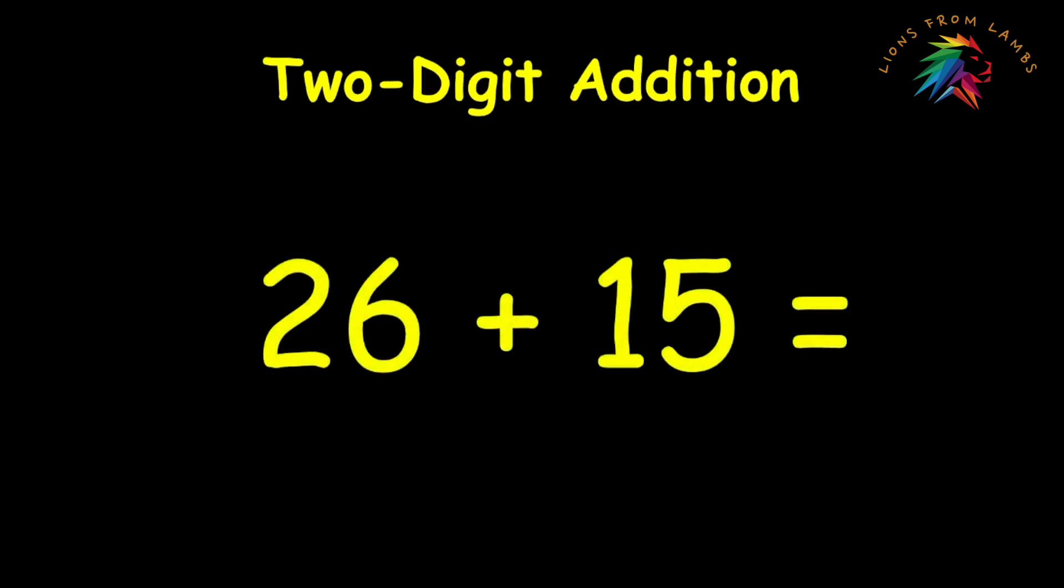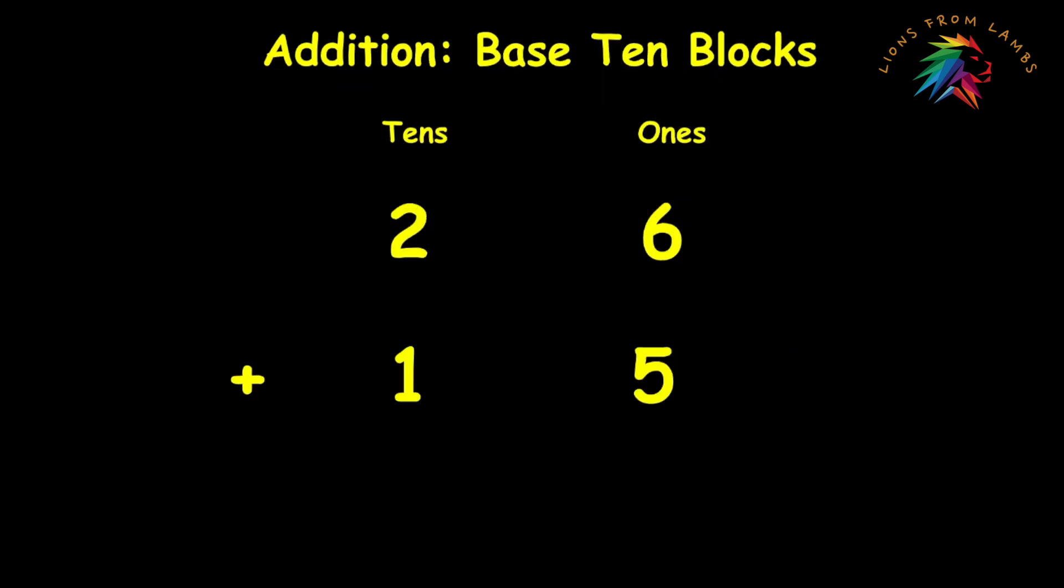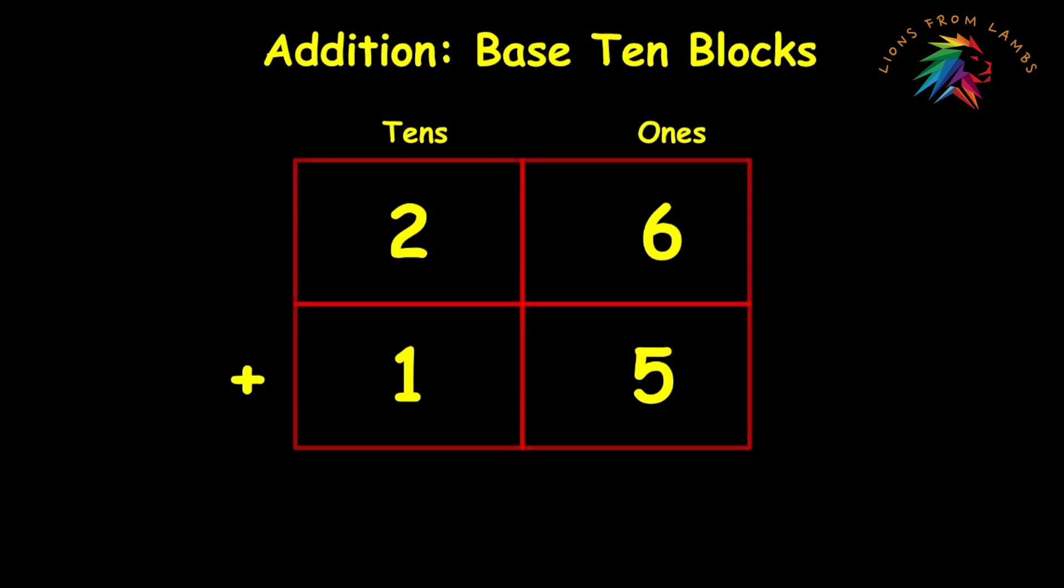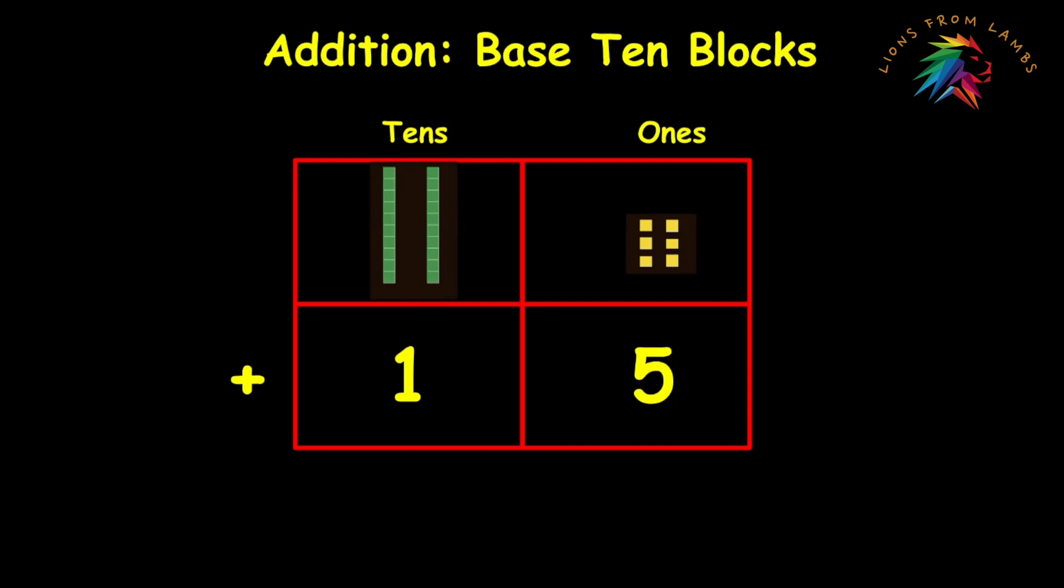Let's look at regrouping in practice. We're going to work with the addition problem 26 plus 15. We always want to be mindful of our place values. The six-digit and the five-digit are in the ones place, and the two-digit and the one-digit are in the tens place. So let's go ahead and stack these numbers vertically so we can work with them a little more easily. We're going to start with base 10 blocks. 26 is represented in base 10 blocks as six units and two rods. 15 is represented with five units and one rod. So now we have a clear visual of the problem.